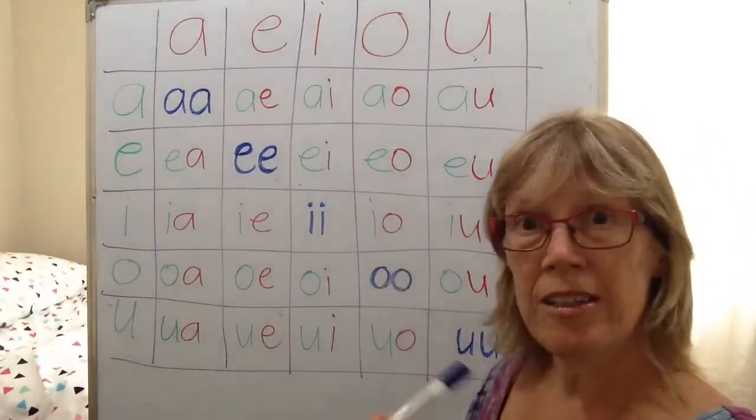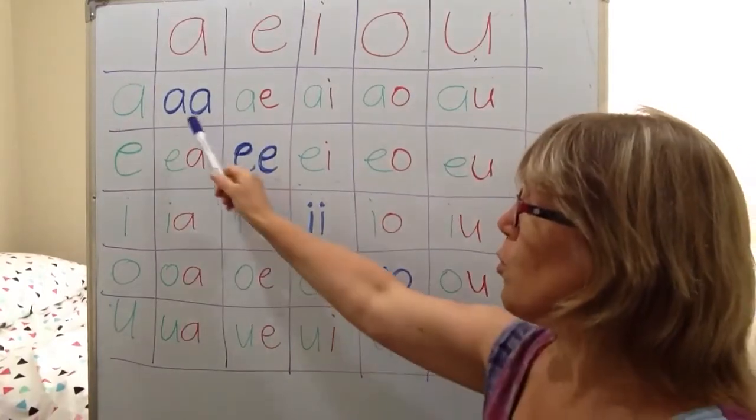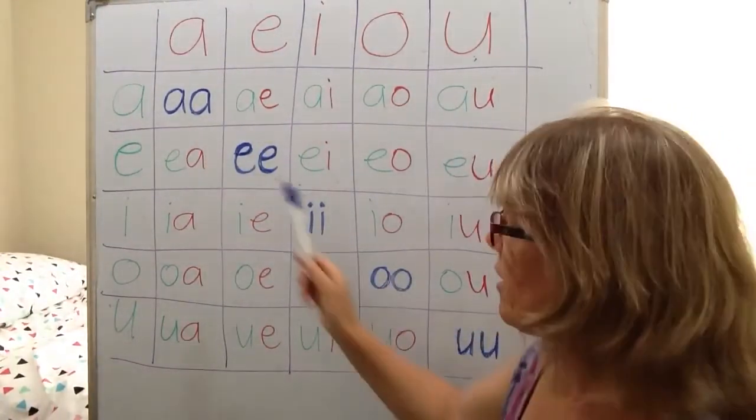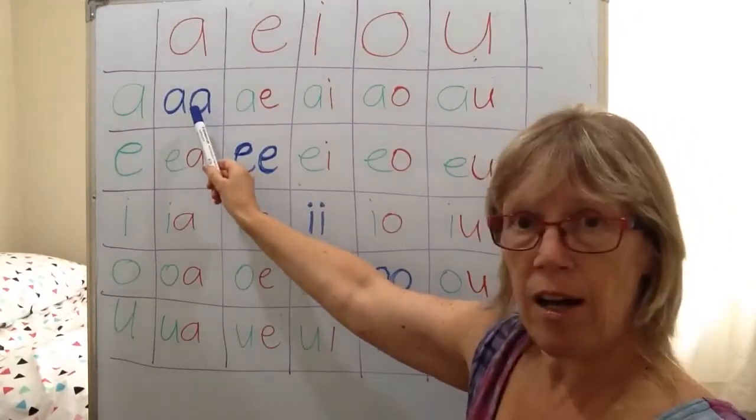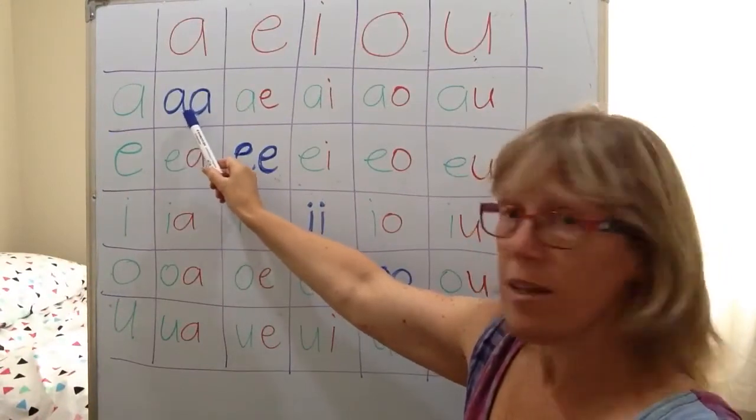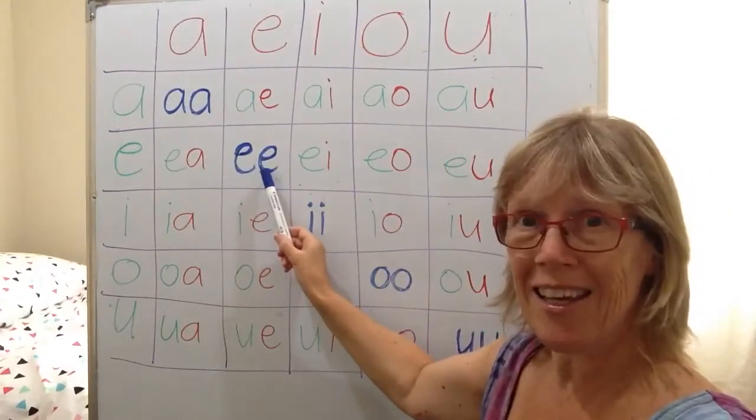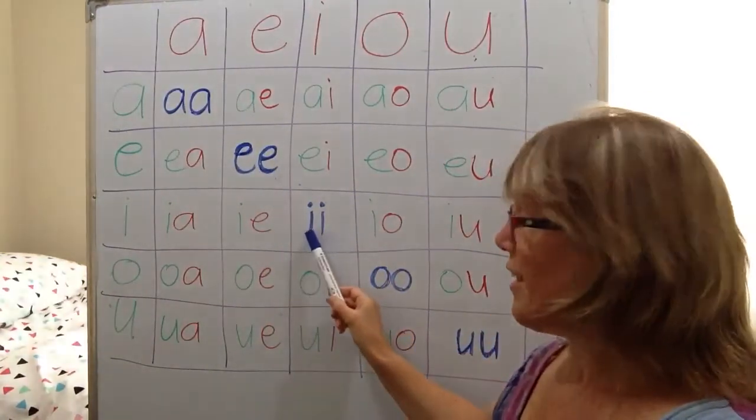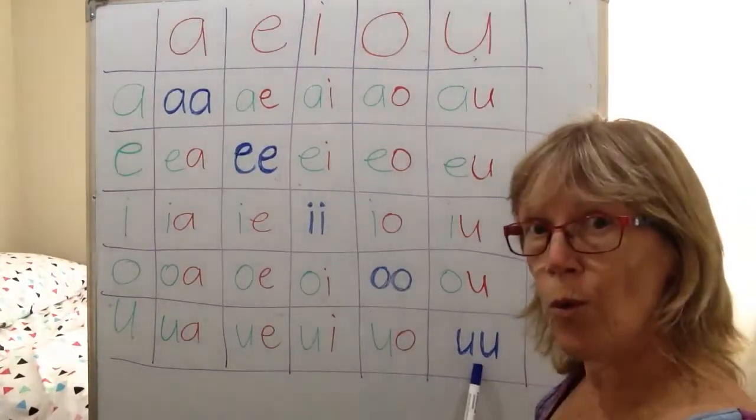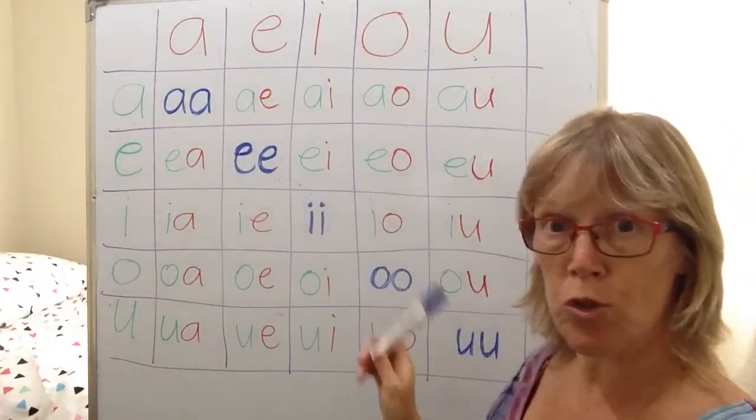All are easy to work out how to pronounce separately. So first of all, these blue ones, we're going to sing that at the very end. These blue ones are the equivalent as if that letter had a macron. So AA is a bit like A with a macron. EE, II, OO, UU. So those are like one letter with a macron. We'll do them at the end.